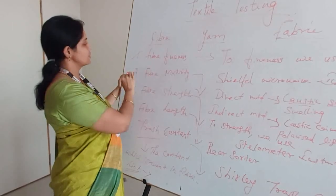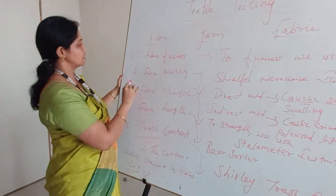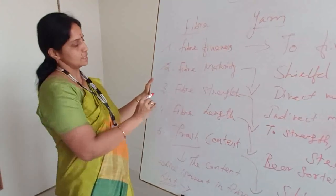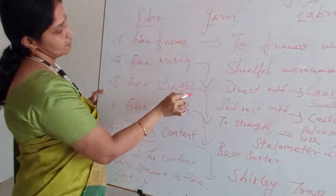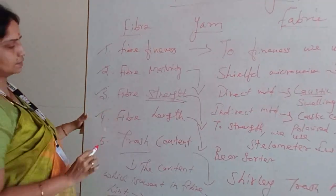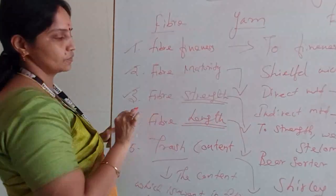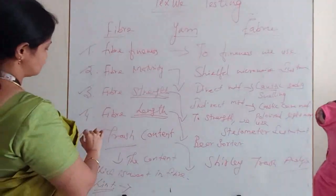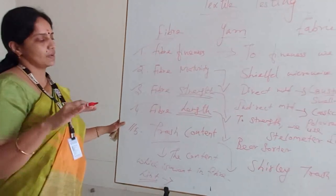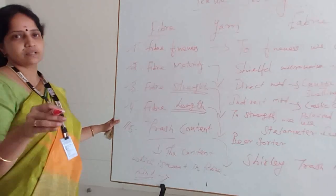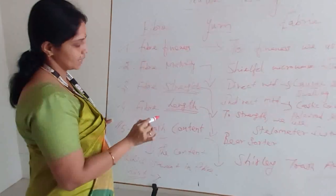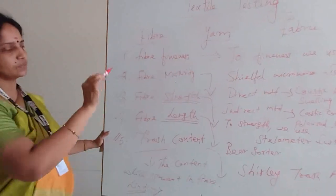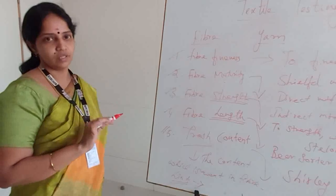The first one is fiber fineness — without proper fineness, we cannot spin the fiber into yarn. The second one is fiber maturity — if the fiber is not matured, we cannot convert the fiber into the yarn sector. Third is fiber strength, which is the breaking strength. Fourth is fiber length — if you do not select the proper length of the fiber, the short fiber will give a protruding effect in the fabric stage. And fifth is trash content — if the trash is not analyzed, the surface of the fabric will be affected in further processing. These five are the basic fiber properties for testing in textiles.